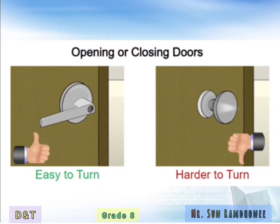The second product is two examples of a door knob. One is easy to turn and the second one is harder to turn. The reason why one is easy to turn is simply because the handle or the knob takes the shape of your hand, so it is very natural to grab the handle. Whereas the second one has a round shape.